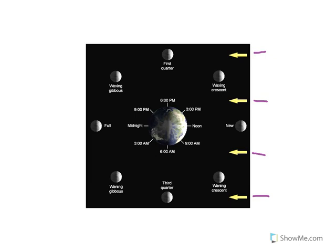It takes the moon a total of 29.5 days to orbit once around the Earth, so the distance the moon travels in one day is a relatively small distance. For example, starting at new moon, new moon would last for one day of that 29.5 days.